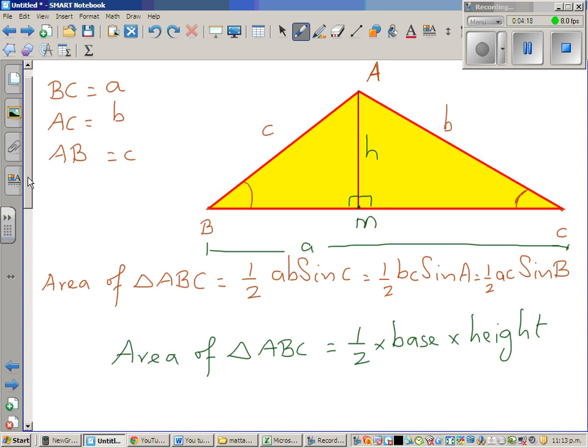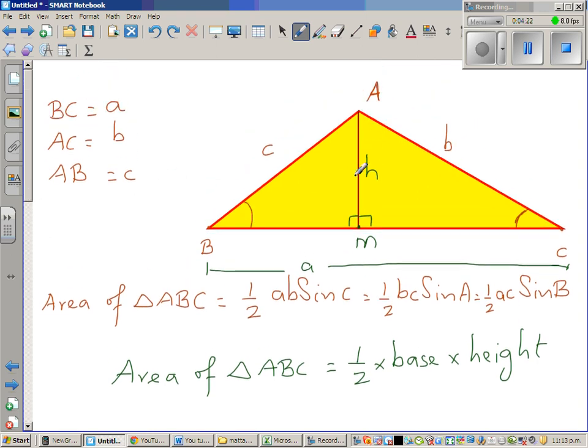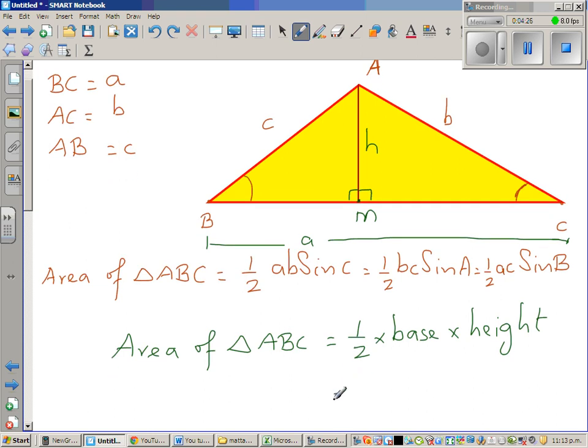So here, what is the base? The base of this triangle is, for this corresponding height, the base is a. So can we say that is half times a times height. So this is the same, the simple half base times height formula.